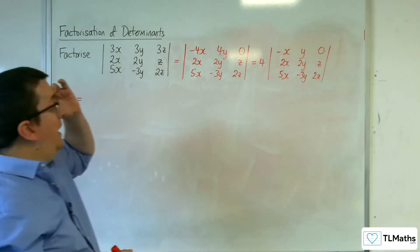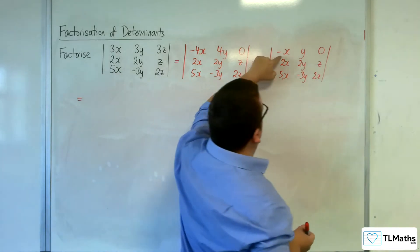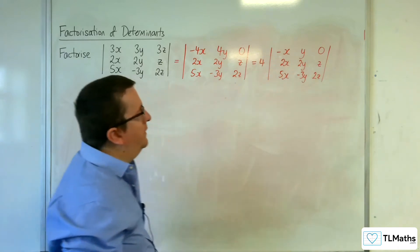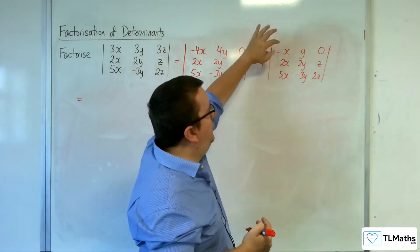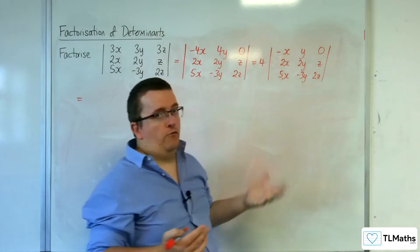Okay, so next job is I would probably use the minus x in order to eliminate the x's here, the 2x and the 5x. So I'm going to do row 2 plus 2 lots of row 1, and I'm going to do row 3 plus 5 lots of row 1.